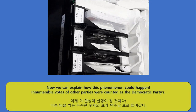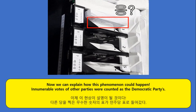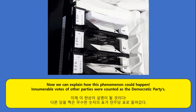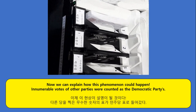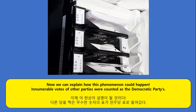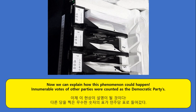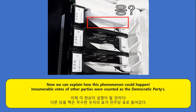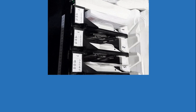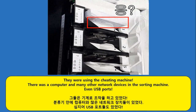Now we can explain how this phenomenon could happen. Votes of other parties were being counted as votes for the democratic party. They were using the cheating machine.